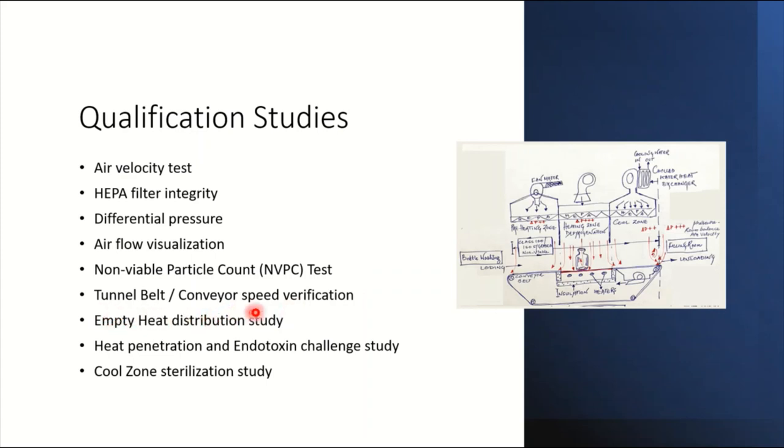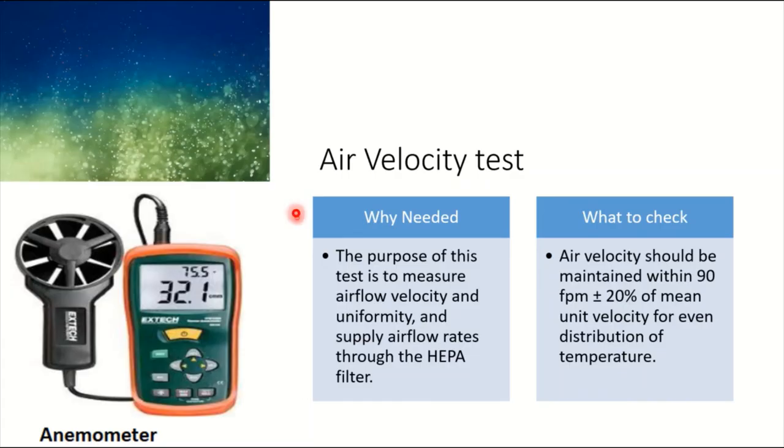Tunnel belt or conveyor speed needs to be verified because you need verified speeds. When placing vials with different diameters and configurations, you need to ensure the speed is maintained. Empty heat distribution study is important to see if distribution is uniform. Heat penetration and endotoxin challenge study is very important—it will give you thermal data and help understand how much endotoxin reduction we're getting. The last study is cool zone sterilization.